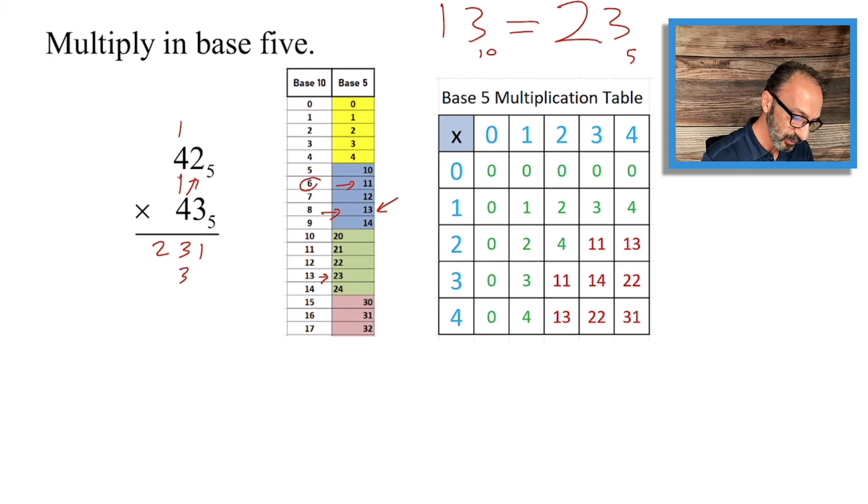Now 4 times 4 is 16. 16 plus 1 is 17. So what is 17? How many fives in 17? This is equivalent in base 5 to three fives and two units, that's base 5.